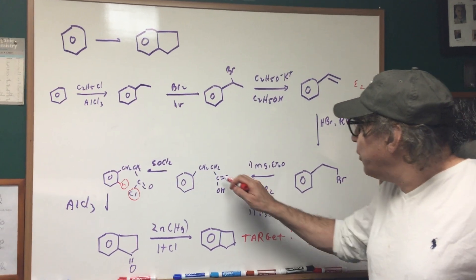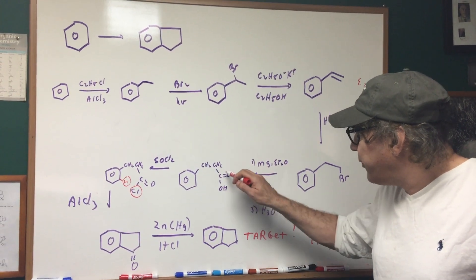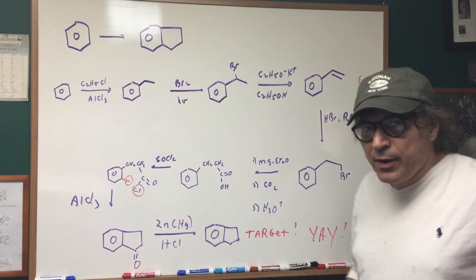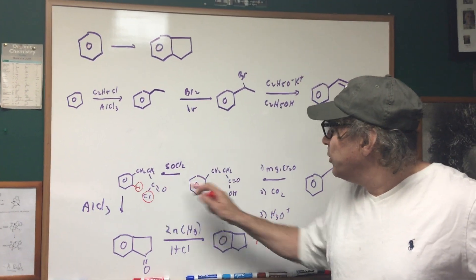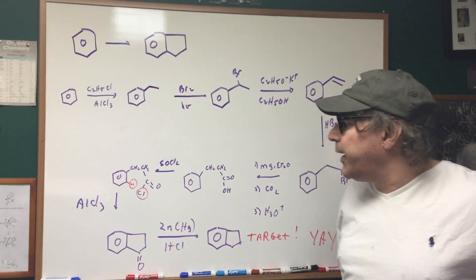Then I'm going to add magnesium and ether, CO2 and acid. That's going to install via the Grignard a carboxyl group. Now it gets interesting. What I'm going to do is hit it with SOCl2 to convert the acid group into the acid chloride.